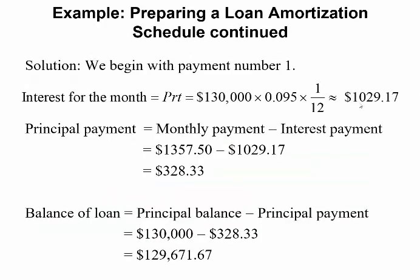You have to pay $1,029.17 in interest. So the principal — how much money is going towards actually paying off the money you borrowed — is your monthly payment minus the interest: $1,375.50 minus $1,029.17 gives a principal payment of $328.33. After one month, even though you paid $1,375.50, the balance is still $130,000 minus the principal payment of $328.33, so you still owe $129,671.67. Most of that payment went towards interest.